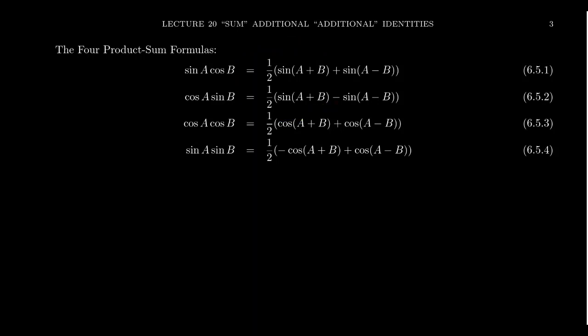This can be very advantageous at times — for example, in calculus, turning a trigonometric product into a trigonometric sum can be very useful. But there are also times, as we've been proving identities, where it would be useful to go the other direction. We'll do that later — the sum-to-product identities is a separate calculation.